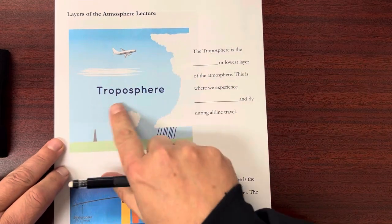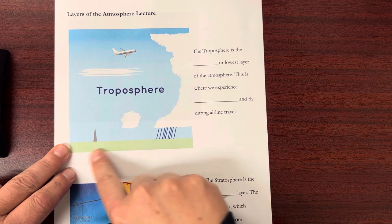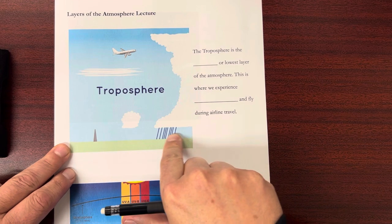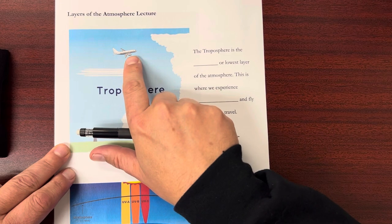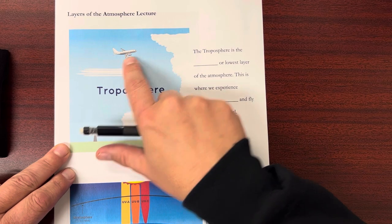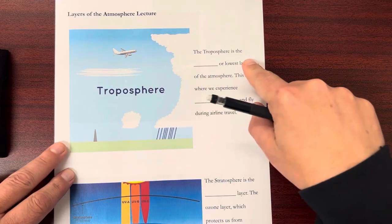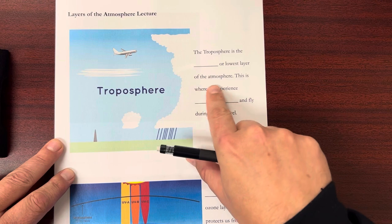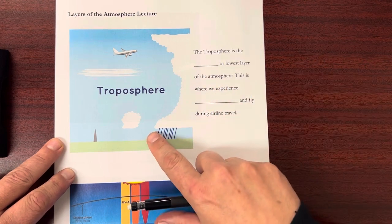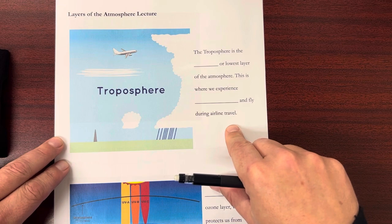So the first one is the troposphere. As you can see in this image, it's the closest one to the ground, but it does go up pretty high. This is where we fly in passenger planes and see our clouds and weather. The troposphere is the lowest layer of the atmosphere where we experience weather and fly during airline travel.